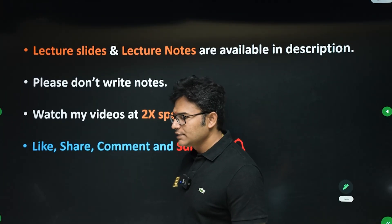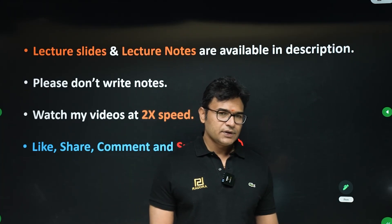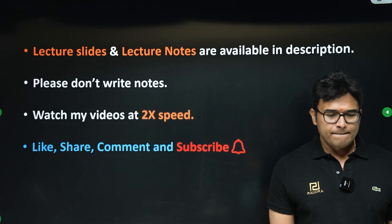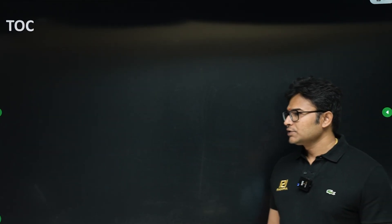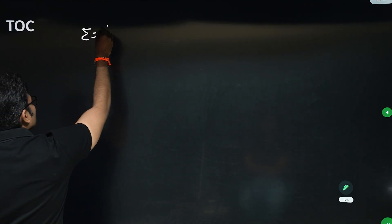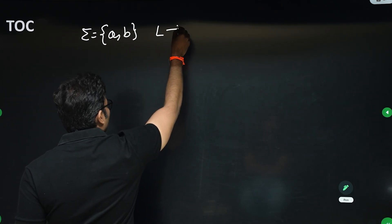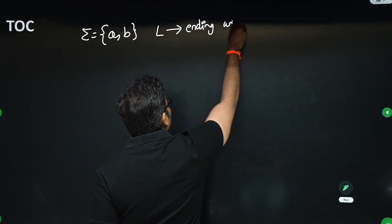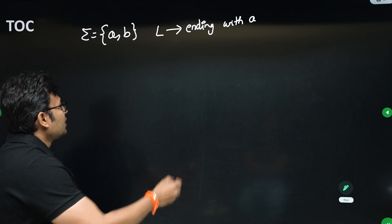In this lecture we will see questions about strings ending with 'a', ending with 'b', ending with something like that. Notes are given in the description, and watch my videos at 2x speed as I will be very slow while explaining. First question: let sigma equal to {a, b} — two symbols — and the language is the set of all strings ending with 'a'.